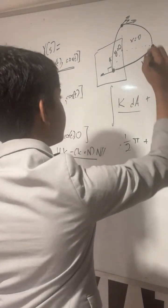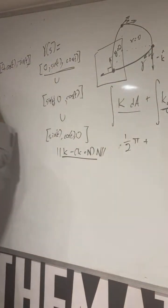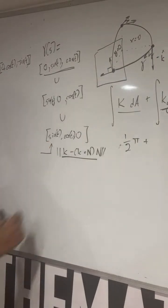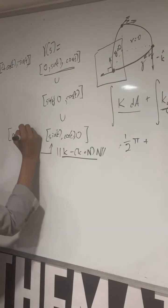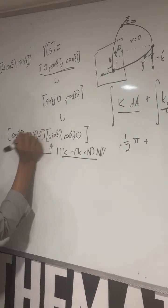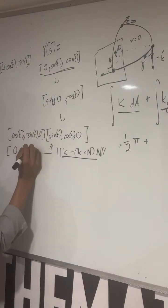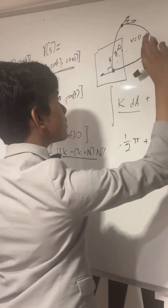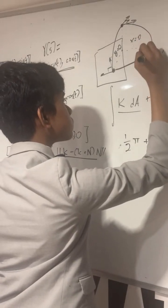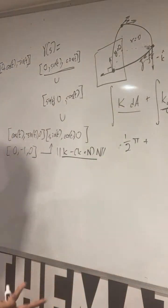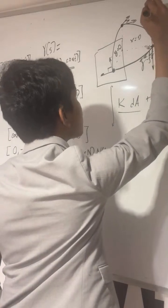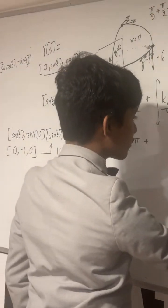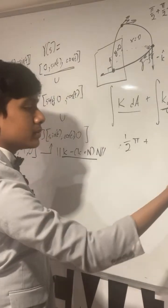So you have minus k. Meanwhile, the z equals 0 curve has a tangent vector of cosine t minus sine t, 0, which becomes 0 minus 1, 0 at that point, which is minus j. And of course, these two are perpendicular. So that's theta being pi over 2. Then you have to repeat the same process with the other two angles, but it's pretty apparent that they're all pi over 2.